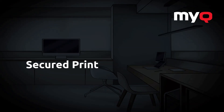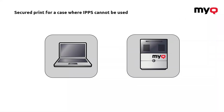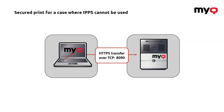The last feature to discuss is secured print. The preferred option is printing using IPPS, where your computer uses IPPS to send a job to the server. If IPPS cannot be used, you can use this application, which stores the job locally and then opens a secured HTTPS transfer to send the job to your server using a secured port, with everything protected by certificates.